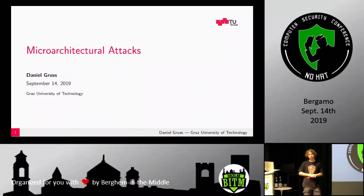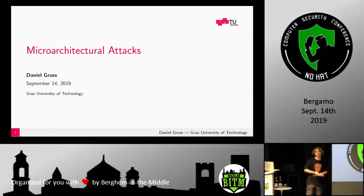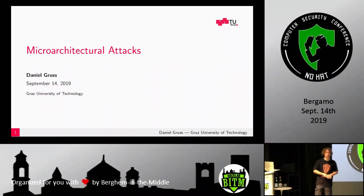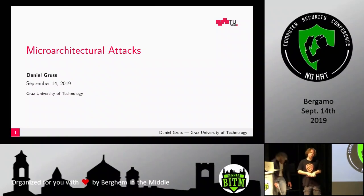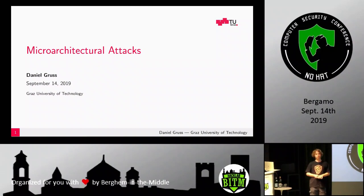Caches always introduce a side channel as long as you share them — things can be cached or not, and you can't avoid this without going to separate caches or separate devices. Another question: why didn't Intel find these vulnerabilities themselves through internal analysis? The complexity of modern systems has outgrown the capacity of the human mind. Engineers work with linear progress on increasing complexity, but combined features grow super-linearly, and we can't keep up.